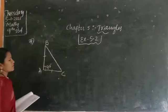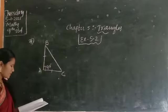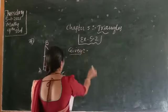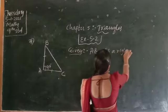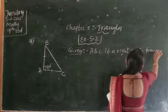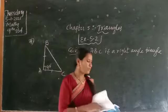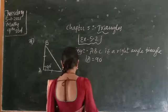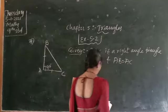You know a right angle triangle has exactly 90 degrees. Here, angle A is 90 degrees. You have to find angle B and angle C. They have given AB is equal to AC. Since AB equals AC, angle B is equal to angle C.